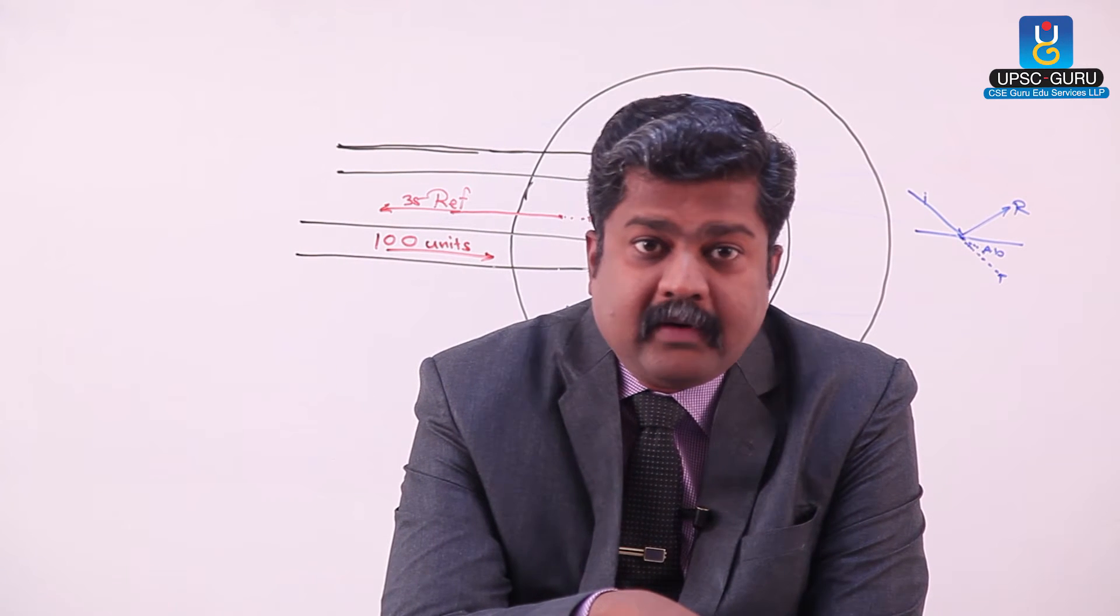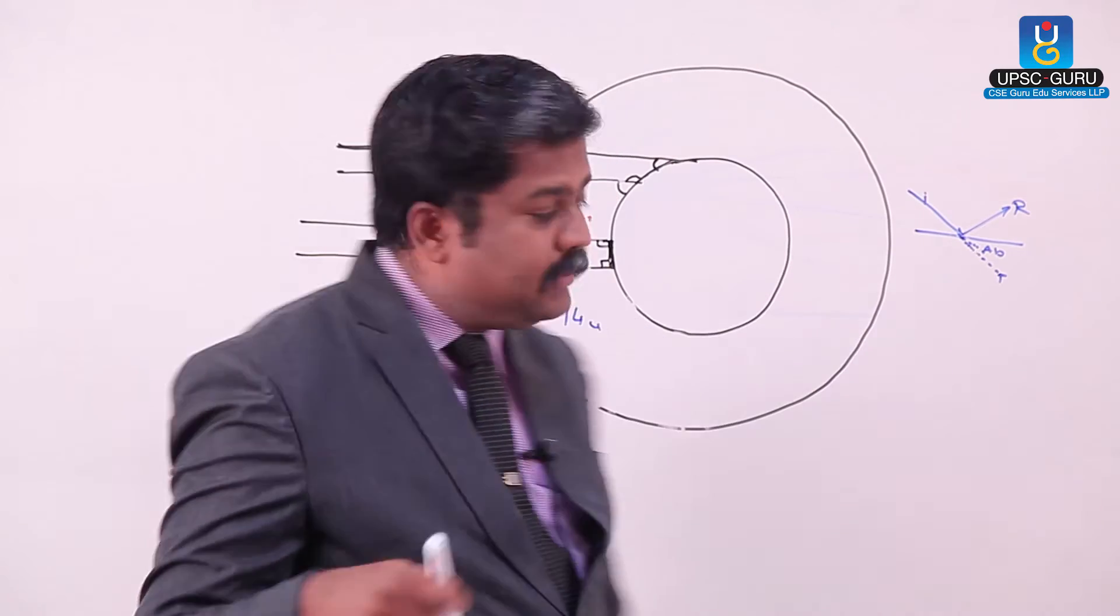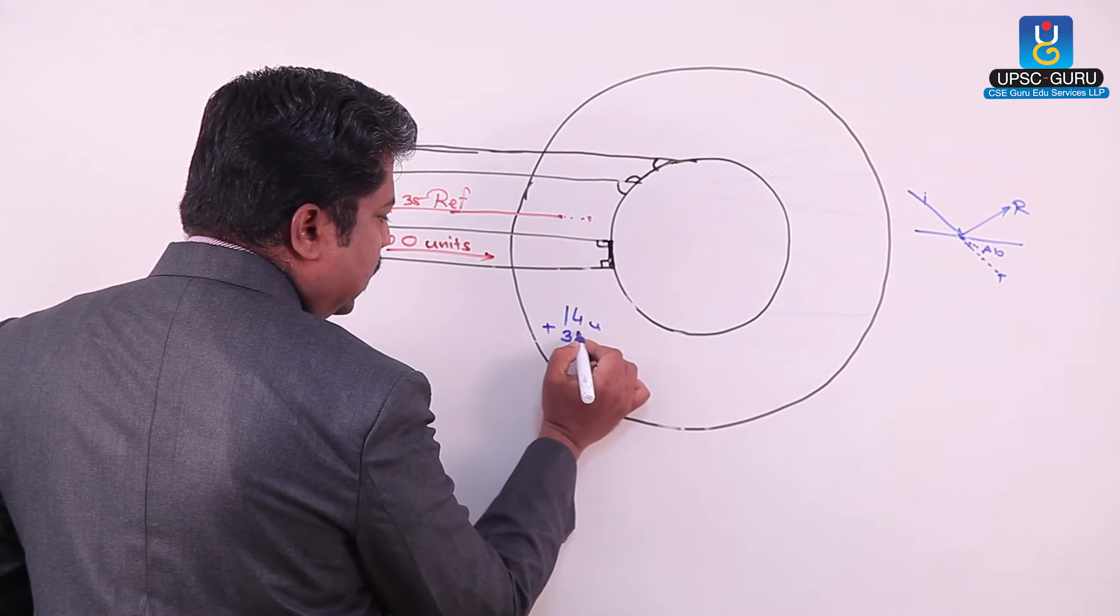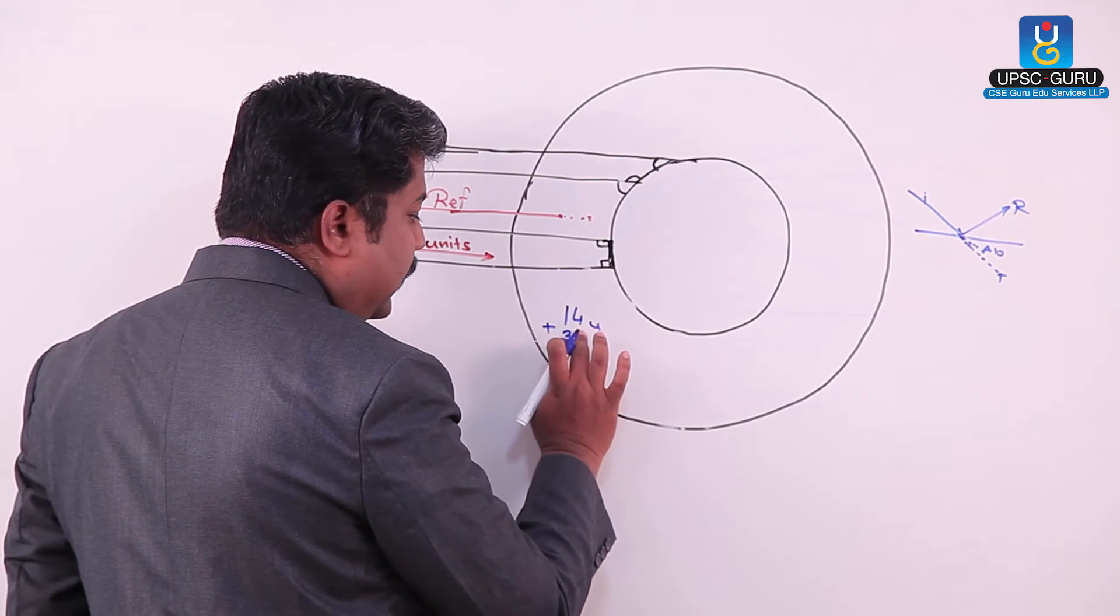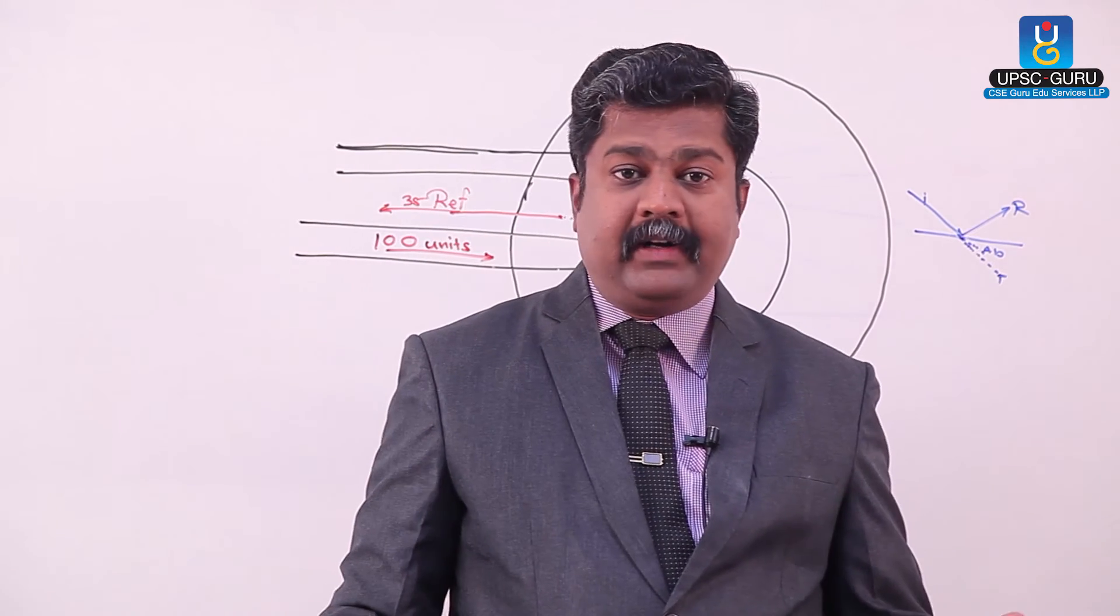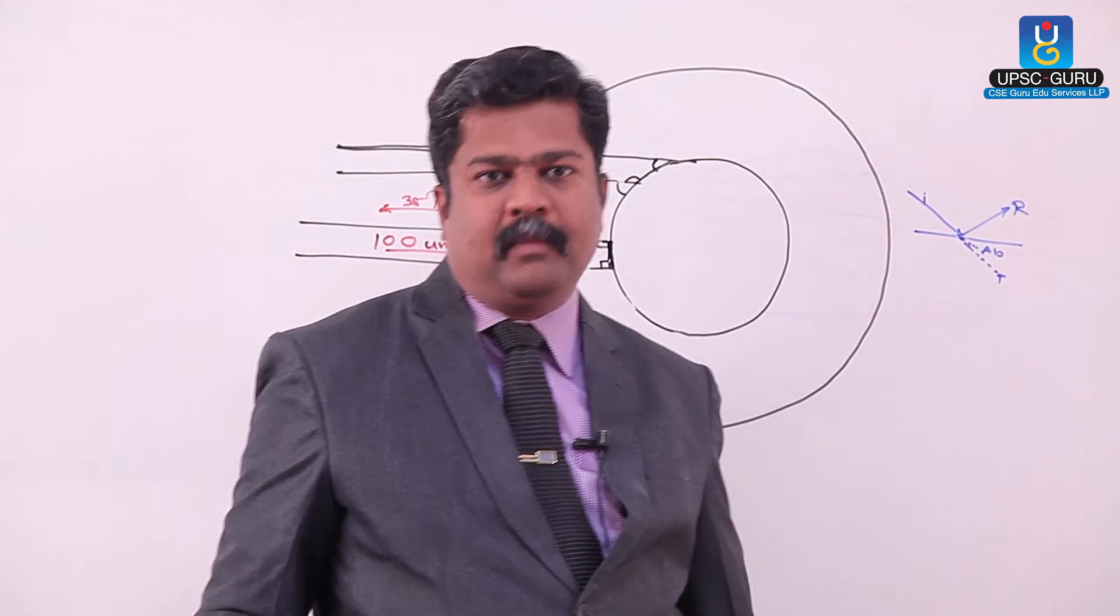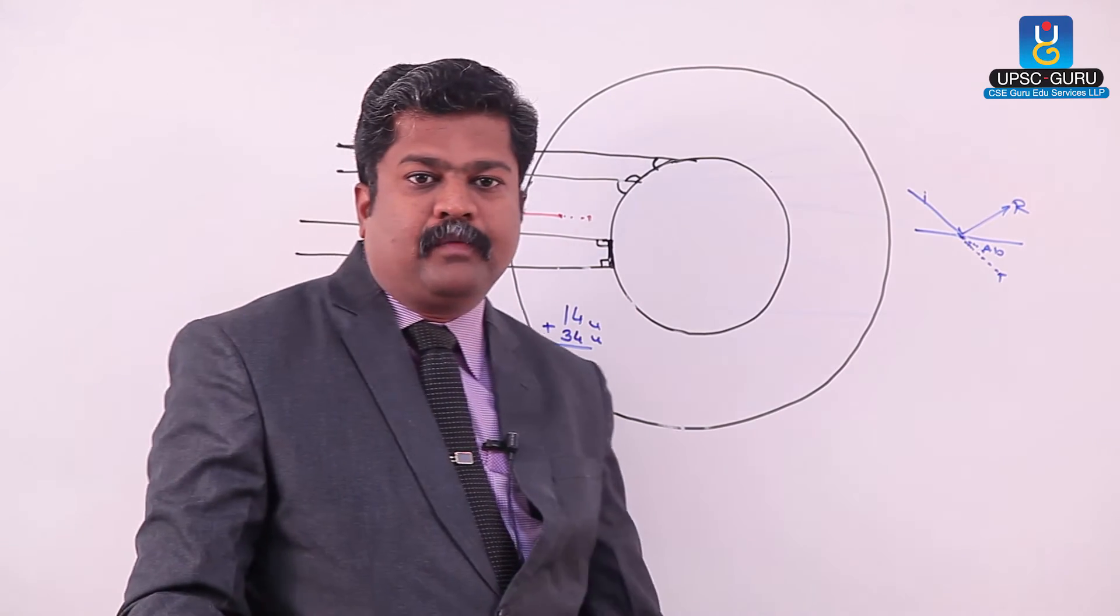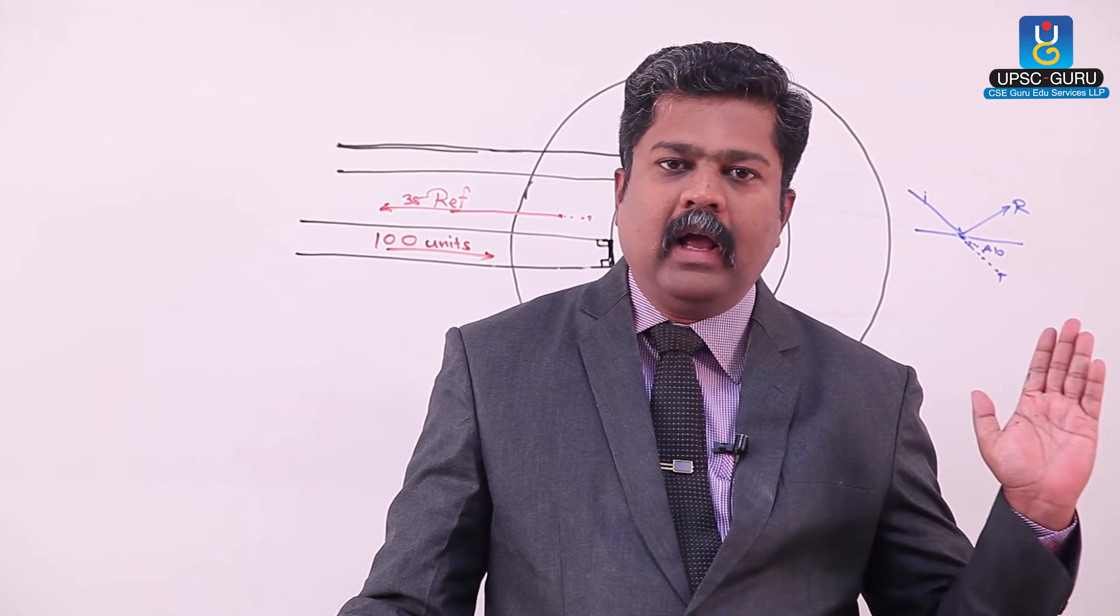So you are aware that atmosphere is absorbing 14 units directly and 34 units through radiated energy by Earth's surface. So this way we are getting here 48 units in atmosphere. Whereas from this 51, whatever the reflected or radiated, 34 are absorbed. So 51 minus 34, that answer comes as 17. 17 units are simply escape to space.